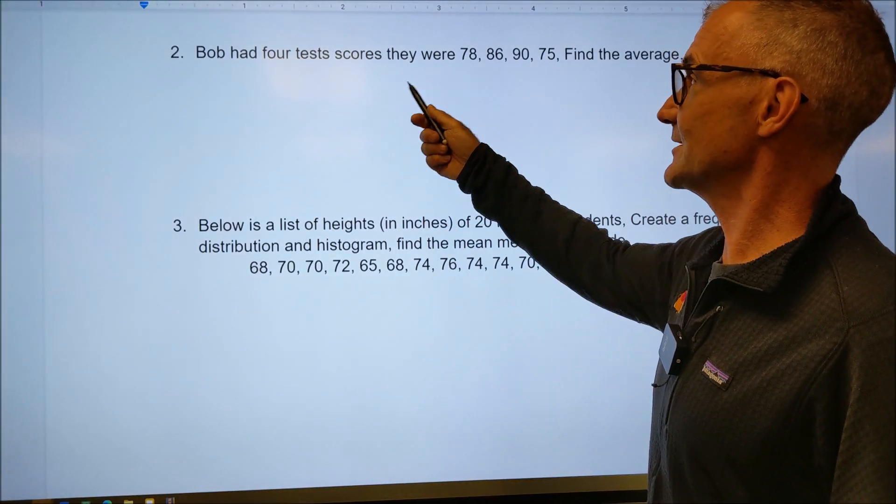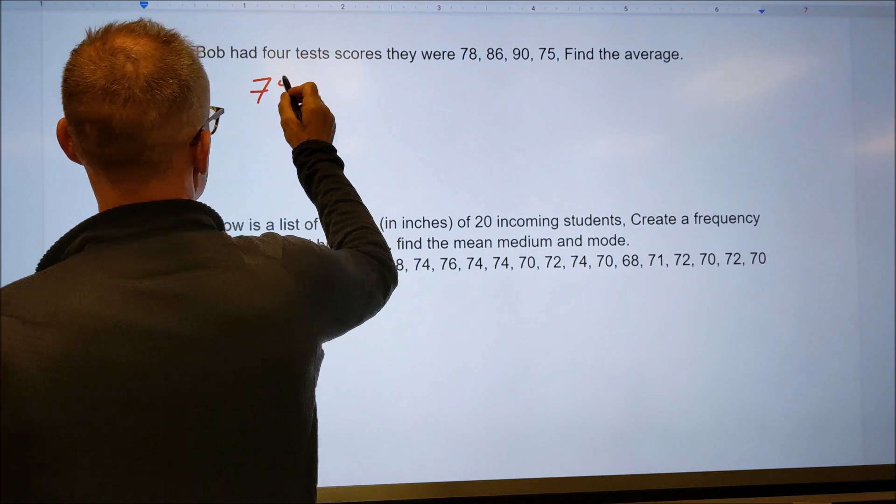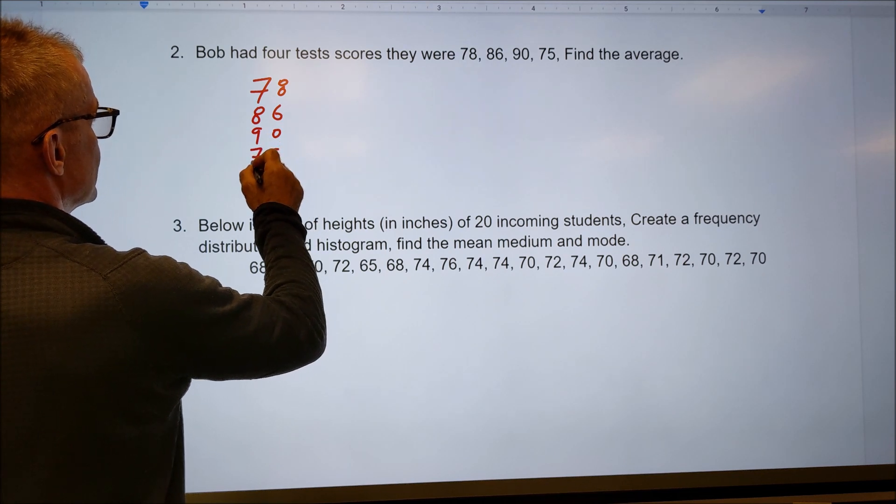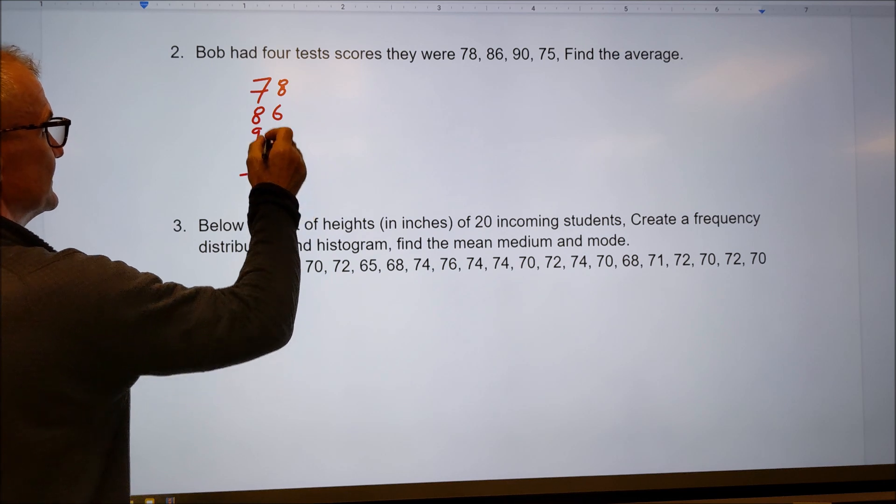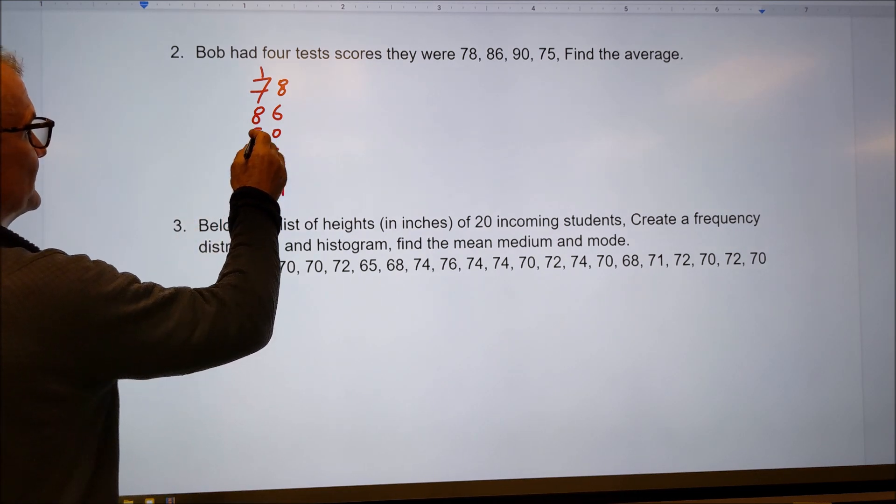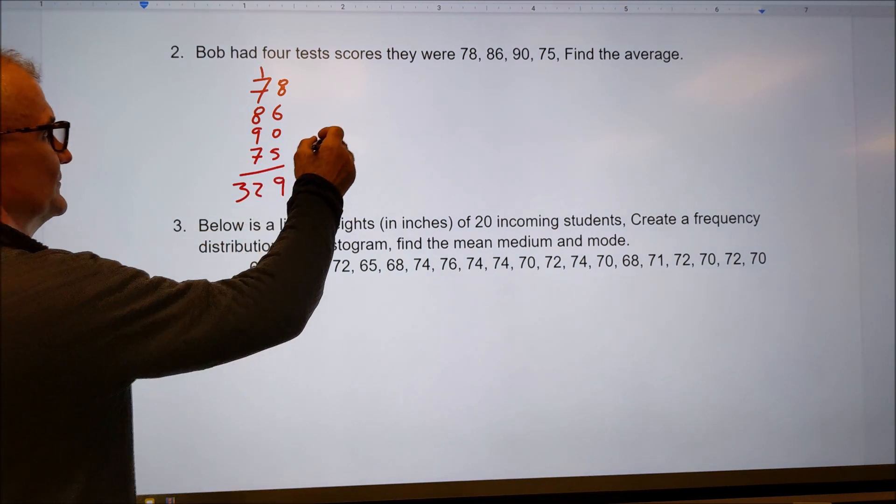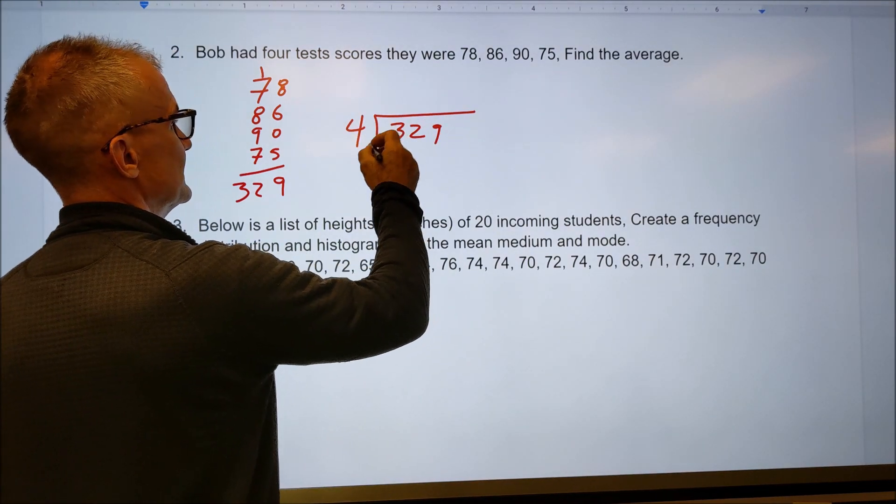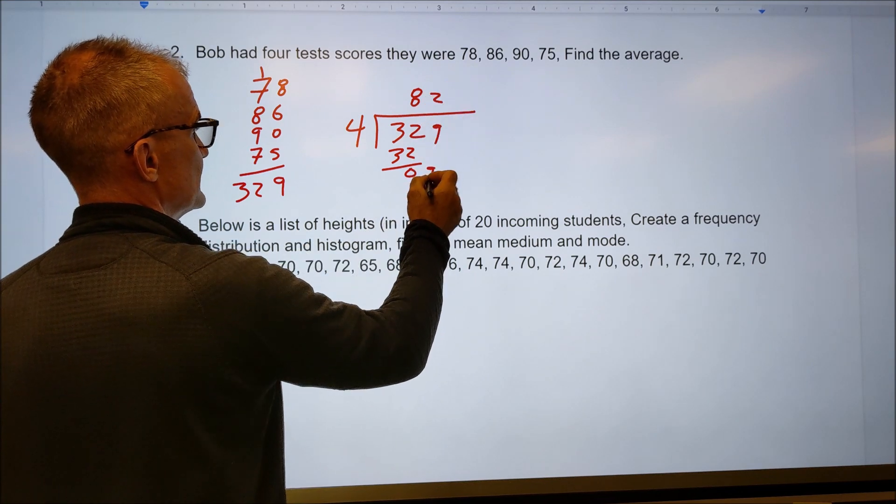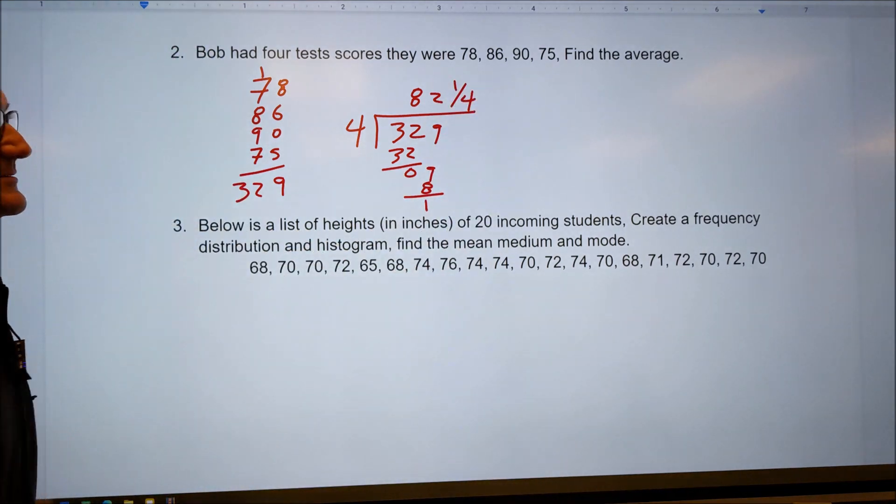Okay, so pause the video. I'll do this problem before I do it. Bob had four test scores. They were these four values here. Find the average. I'm going to add all four of those values up. So 78 plus 86, 90, and 75. 8 and 6 is 14 plus 5 is 19. Carry the 1. 7 and 1 is 8. And 8 is 16. 16 and 9, 25, 25, 32. So the total values, the sum of all the values is 329. And there are four test scores. So 4 into 329. It's going to be 8. That'll give me 32, 0, and 9. It doesn't go in 9 evenly. It's going to go in there twice. Give me 8. One left over. So it's 82 with a remainder of 1. So 82 and a quarter is my average score.